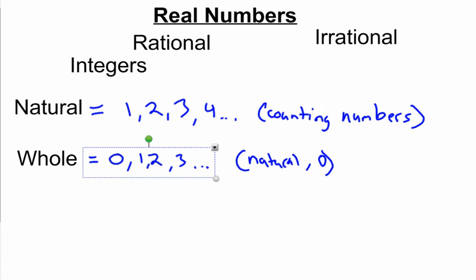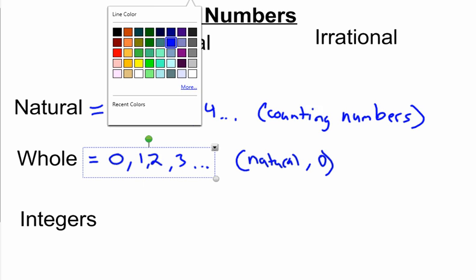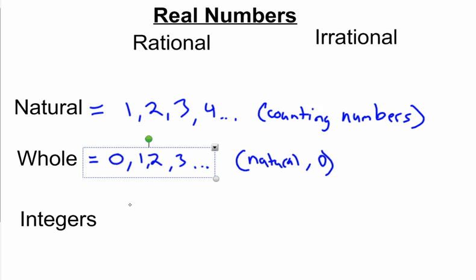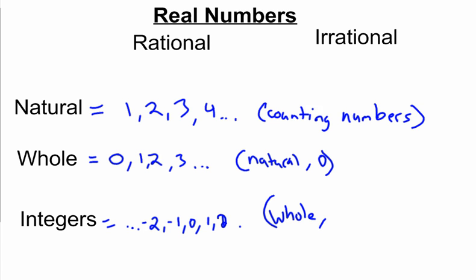Next one is integers. It's not pronounced integers, it's pronounced integers. And integers are, well you could guess, they are going to include all the whole numbers. But they're also going to include negatives. So we're going to go like negative two would be included, negative one and zero and all the positive natural numbers. Oops, that should be a two. So whole numbers and negative whole numbers.